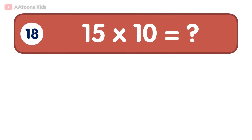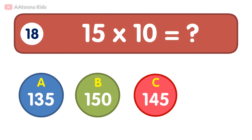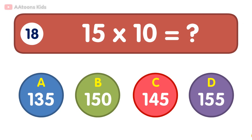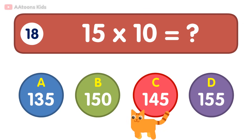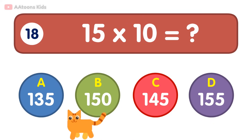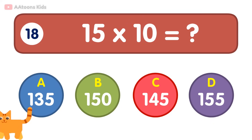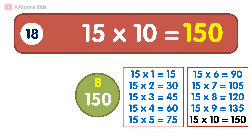15 times 10 is equal to 150. 15 times 10 is 150.